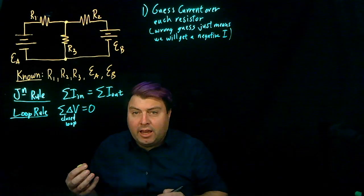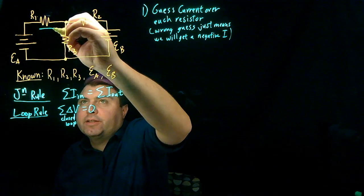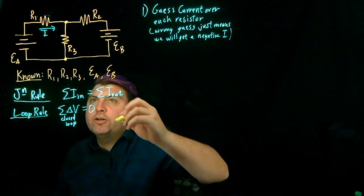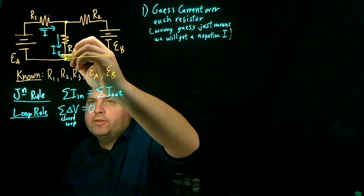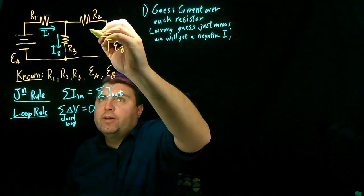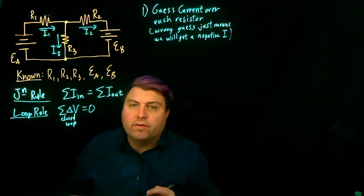So let's take a guess. We're going to guess that the current is going to go in this direction over R1. We're going to guess the current is going to go in this direction over R3, so we can call this I3 and I1, and we're going to guess that the current is going to go in this direction for I2.